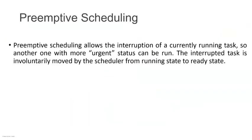Let us discuss the types of scheduling one by one. The first type is preemptive scheduling. Preemptive scheduling means that if one task is currently running and another urgent task comes in, the current running task will be stopped — it moves from the running state to the ready state — and the urgent or high-priority task gets executed. That type of scheduling is called preemptive scheduling.